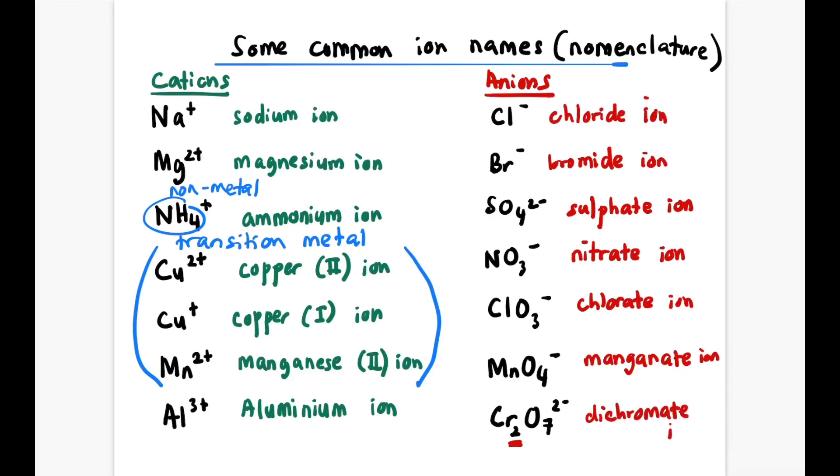ClO3- is chlorate ion, MnO4- is manganate ion, Cr2O7²- is dichromate ion. Both Mn and Cr are transition metal elements, so they can form MnO4- and Cr2O7²-. These are polyatomic anions, while NH4+ is a polyatomic cation.